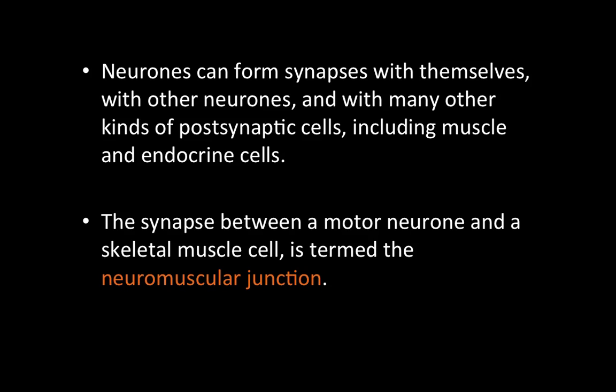Neurons can form synapses with themselves, with other neurons, and with many other kinds of postsynaptic cells, including muscle and endocrine cells. The synapse between a motor neuron and a skeletal muscle cell is termed the neuromuscular junction, and today that's the one we're going to be focusing on.